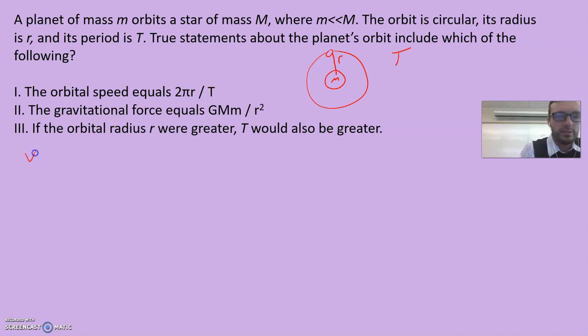True statements about the planet's orbit include which of the following? The orbital speed is 2πR over T. Well, that's always the case, isn't it? The tangential velocity is always equal to 2πR over T. So that one's true.